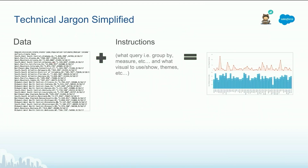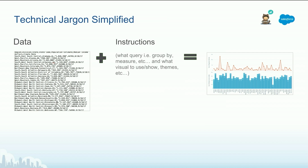Einstein Analytics is not different from any other analytics tool — it's primarily about the data on the left. We start with data, give it instructions through the tool: query by what, group by what, what's the measure, the filter, the order, the chart type, the presentation, the colors — and you end up with a combo chart that looks familiar to users. Behind the scenes, it's all about instructions. When you look at the technical jargon — the EA instructions — we have four categories. The first two are the data layer ones: data flows and recipes.